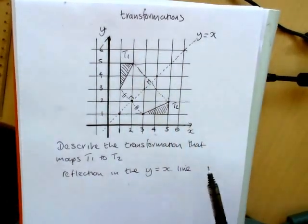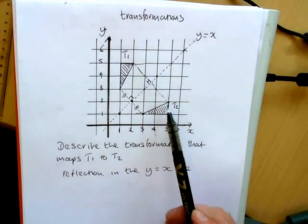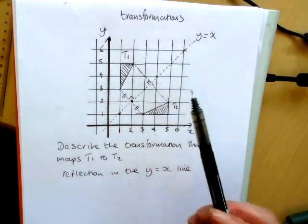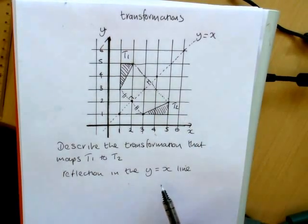So once again then, to recap, transformations that look like rotations but are not generally are going to be a reflection in the y equals x line, as I've shown you in this example.